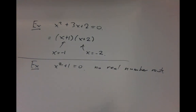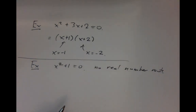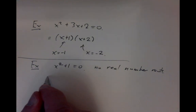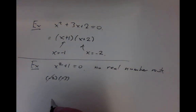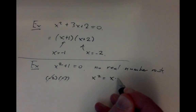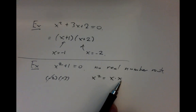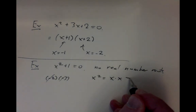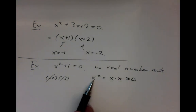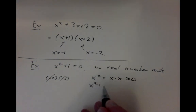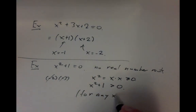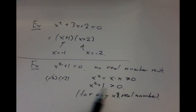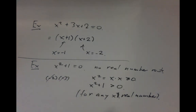Real numbers can be positive, negative, zero, decimal, or a fraction. x²+1=0 has no such solution because minus signs cancel in pairs — if you multiply a negative number by itself, the minus signs cancel out. So x squared is never negative. If there's a minus sign, there are two, and they cancel; if there's no minus sign, there's nothing to cancel. So x squared is always non-negative, and x squared plus 1 is always positive for any real number x. It's not zero, so no real number satisfies the equation.